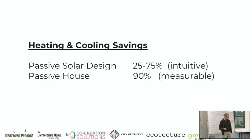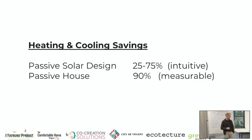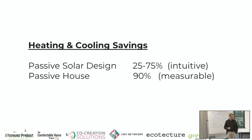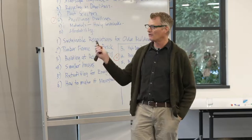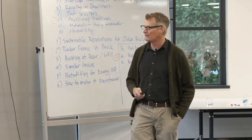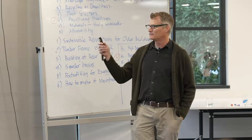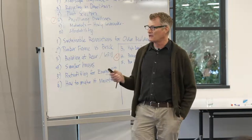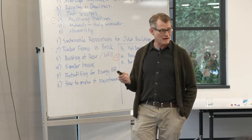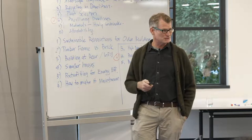Passive solar design can vary a bit anecdotally depending on how well you do it. You will save energy, but it's hard to quantify down to an exact number — it can range from some to a lot. Passive house, however, is a system where everything is measurable and they put exact numbers on it.